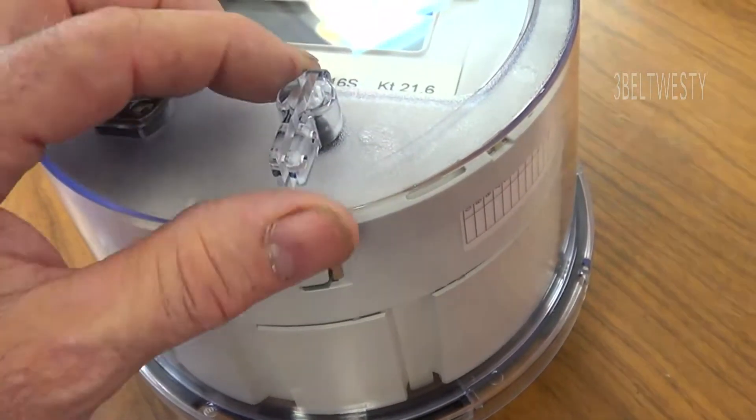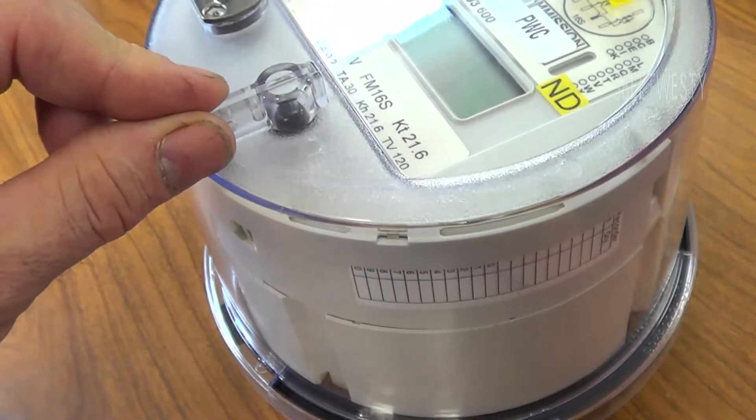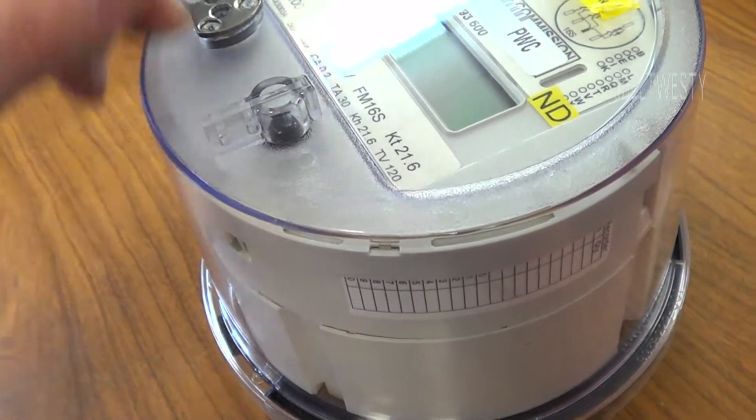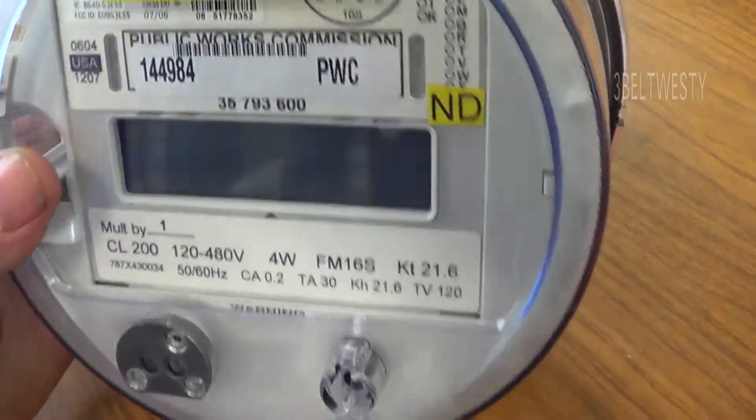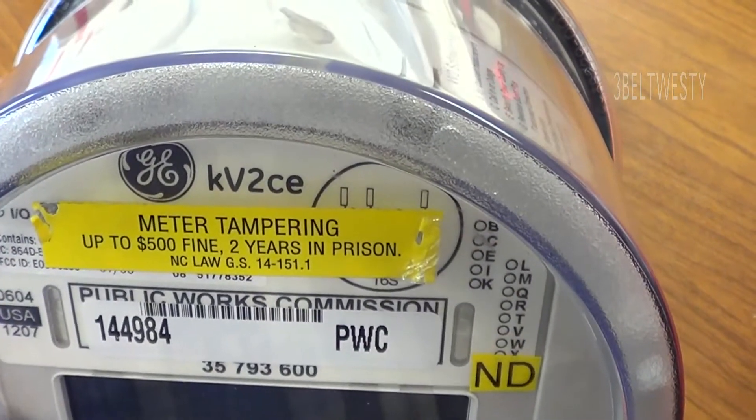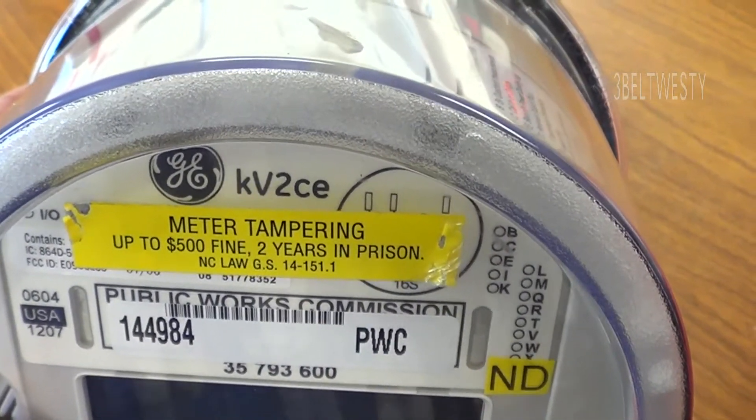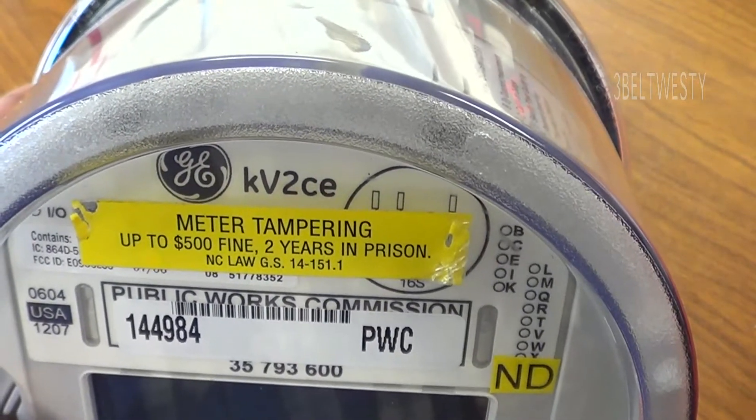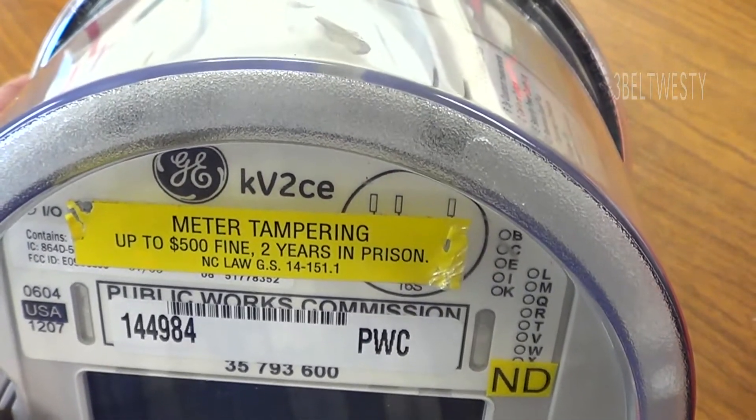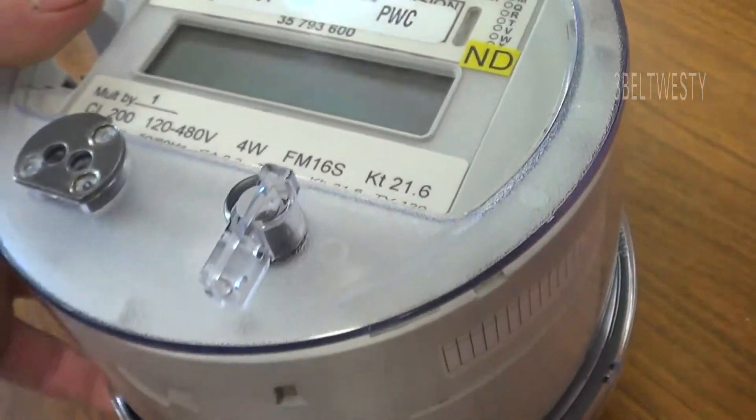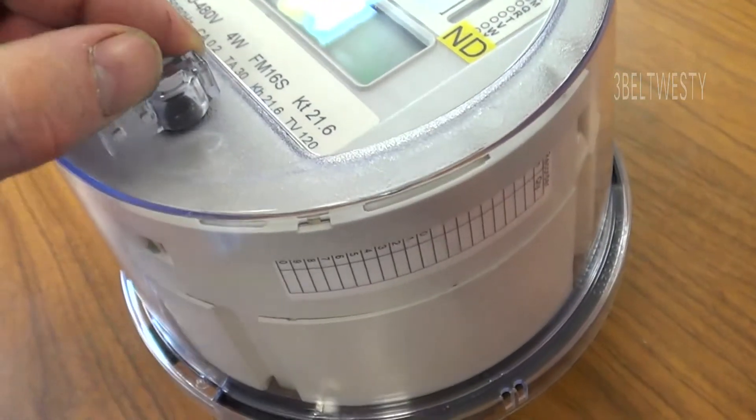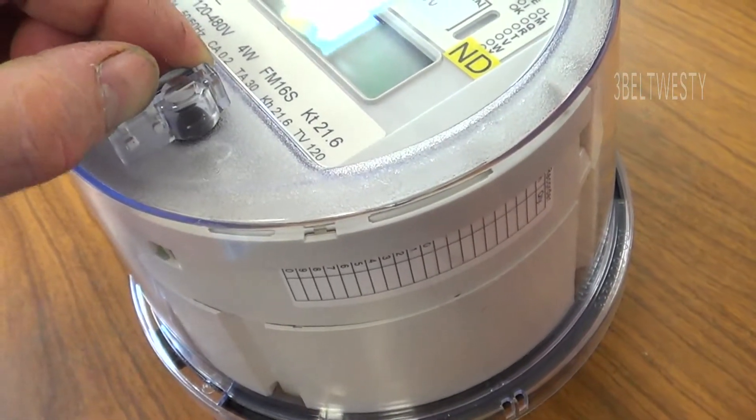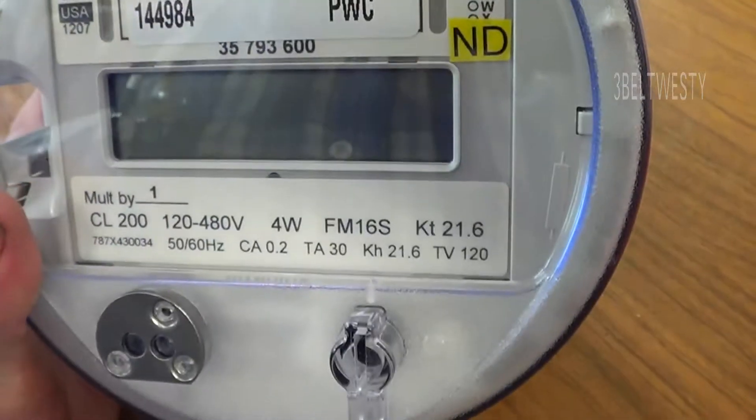This is the optical port. This is the demand reset feature and so the C model does and the KV2 I believe does but the one with the E it's a little bit more obscure model has no demand on it so you can't reset the demand and I don't believe this reads out the demand.